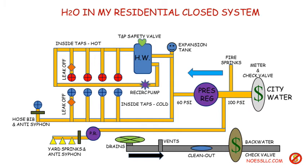Coming down the cold water path past the washer connections, I have hose bibs on the outside of the house all pressurized at 60 PSI. Unusually, I also have an anti-siphon valve on every one of these hose bibs — something I'd never seen before buying this house. One of them is failing and making a terrible racket when you turn the hose on, so I'm going to have to remove and replace it.